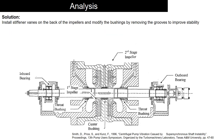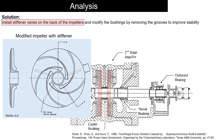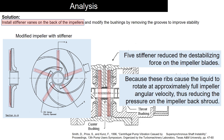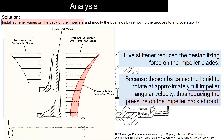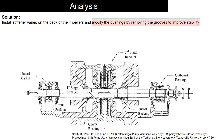To tackle this issue, two improvements were made. Stiffener vanes were installed on the back of the impellers to reduce destabilizing forces. The ribs caused the liquid to rotate at full impeller angular velocity, therefore reducing pressure on the impeller back shroud. The bushing was also modified by removing the grooves to improve stability.